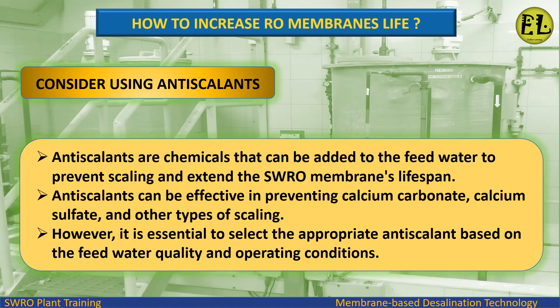Antiscalants are chemicals that can be added to the feed water to prevent scaling and extend the SWRO membrane's lifespan. Antiscalants can be effective in preventing calcium carbonate, calcium sulfate, and other types of scaling. However, it is essential to select the appropriate antiscalant based on the feed water quality and operating conditions.